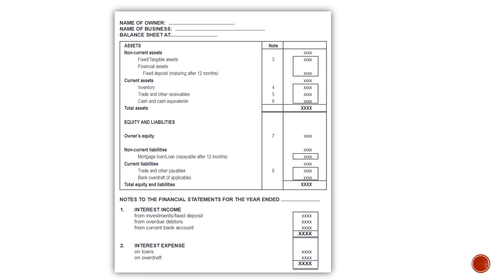Total equity and liabilities should be the same as the total of your assets. This is because every debit has a credit, so these should be equal to each other. If they are not, you made a mistake somewhere and you need to go back.